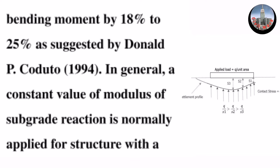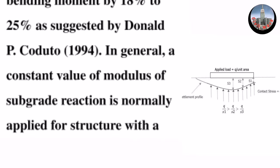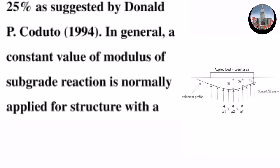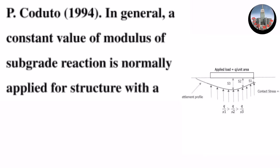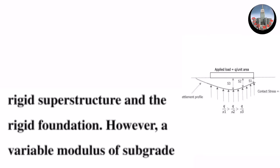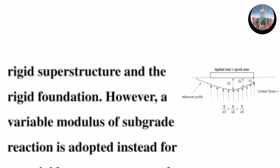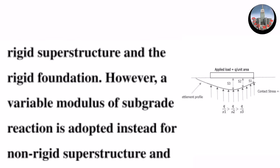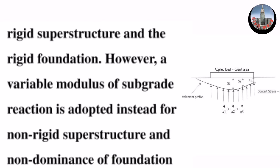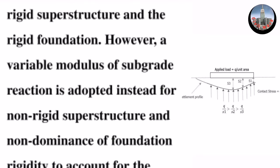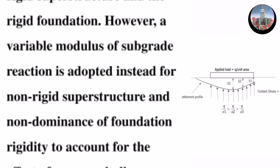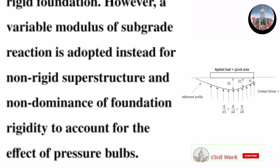In general, a constant value of modulus of subgrade reaction is normally applied for structure with a rigid superstructure and the rigid foundation. However, a variable modulus of subgrade reaction is adopted instead for non-rigid superstructure and non-dominance of foundation rigidity